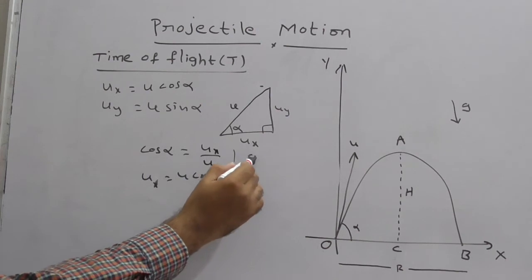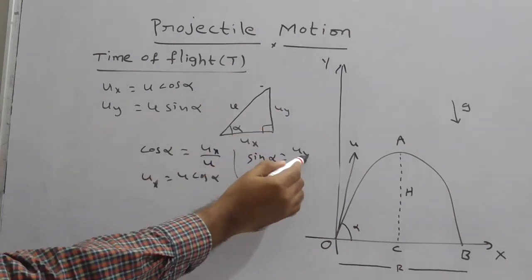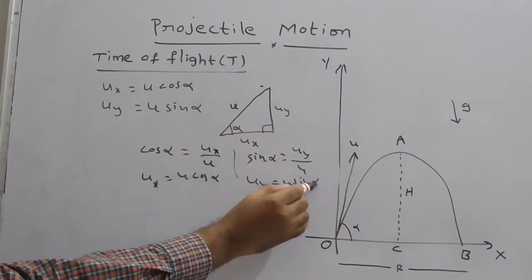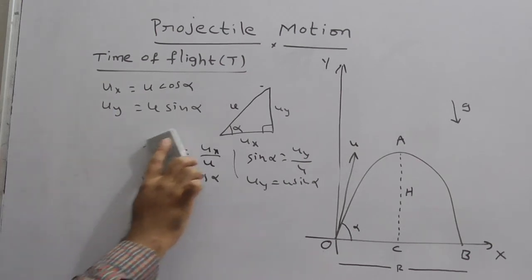Similarly, what is sin alpha observed here? Sin alpha is opposite by hypotenuse, that is uy by u. Therefore, uy gives u sin alpha. Very simple concept. So we can write formulae for ux as u cos alpha and uy as u sin alpha.